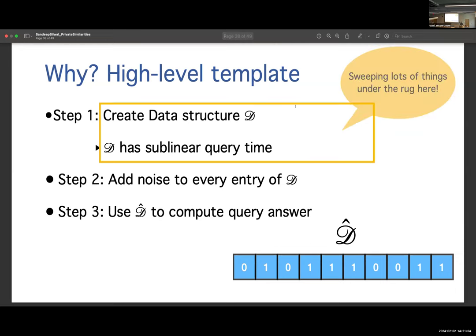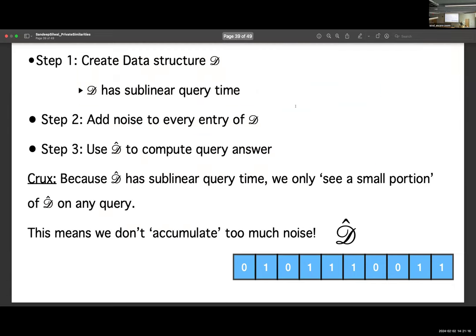So why is this helpful? And one key point is, of course, this is a very vague outline. Step one obviously requires a lot of work. You can't just get sublinear algorithms for free, but let's ignore that part. And the reason this framework works really well is because of the following. We know d has a sublinear query time. That means when we try to answer a query, we only look at very few entries of this, very few memory cells, or very few entries of the array. But the point is, since we've added noise to every entry, we're only looking at a very small chunk of the noise. So that means we don't accumulate a lot of noise, which is good for the accuracy. So somehow there's like this direct connection between sublinear query time and having good accuracy.